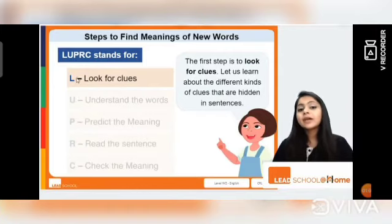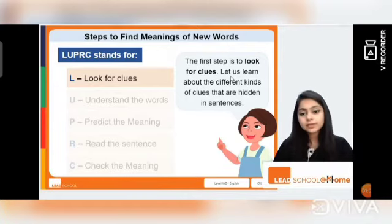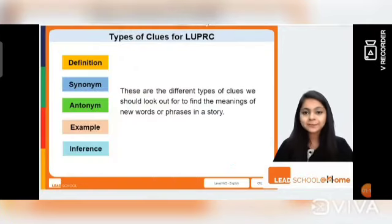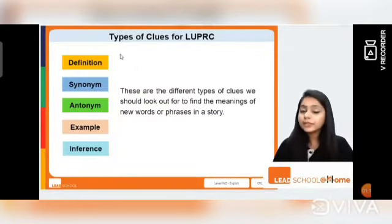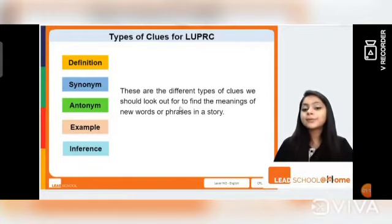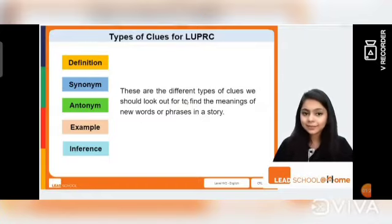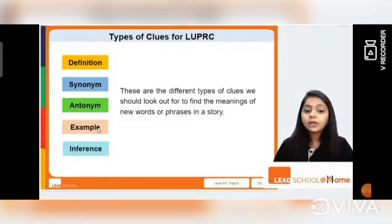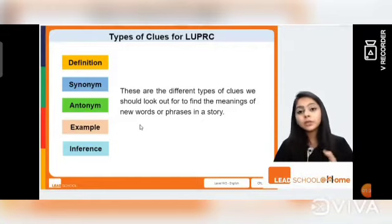Since L stands for 'Look for clues,' the first step is to look for the clues hidden inside the sentences. There are different types of clues we should look out for to find the meanings of new words or phrases in a story. These include a definition, a synonym, an antonym, an example, or an inference as a clue given in the sentence itself.